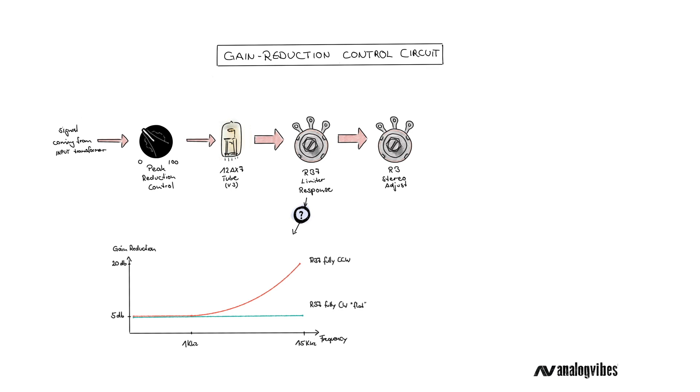So with R37 turned fully counterclockwise, the gain reduction circuit will apply like 15dB more gain reduction to frequencies around 50 kHz than it does to frequencies below 1 kHz. This will kind of soften out the high end depending on the dynamics of the signal.